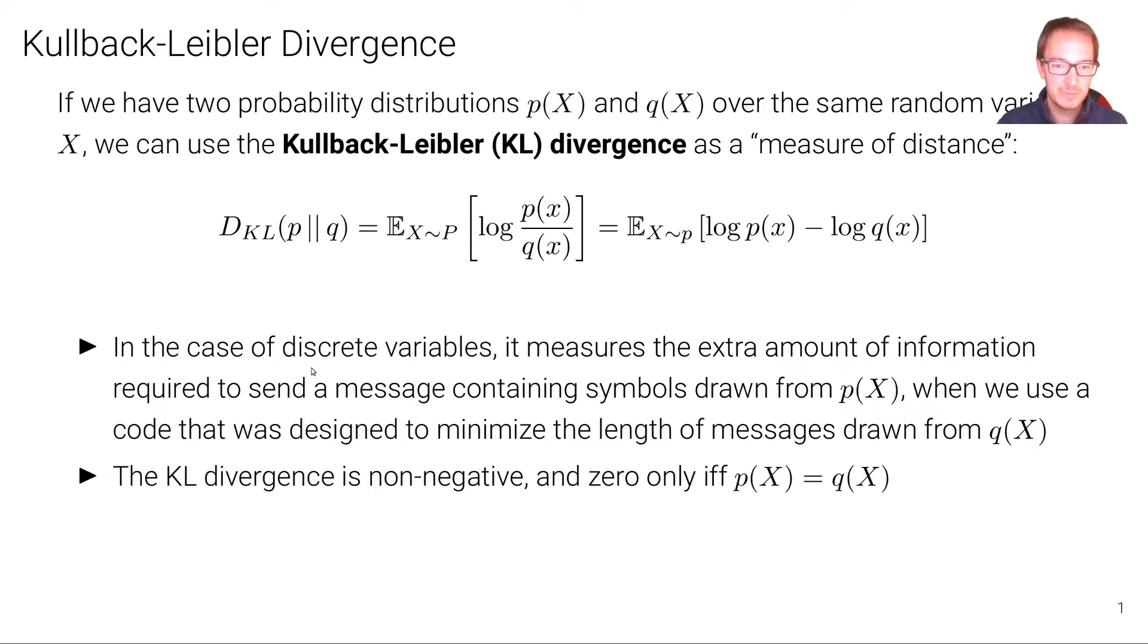In the case of discrete variables, this measures the extra amount of information required to send a message containing symbols drawn from p(X), when we use a code that was actually designed to minimize the length of messages drawn from q(X). Think about the previous unit, how we looked at optimal messages. If we derive the messages to be optimal for one distribution, but actually send a message containing symbols drawn from another distribution, this is how you can think of in the discrete case what the Kullback-Leibler divergence measures. And this is actually also where we'll use it in lecture 9 of the deep learning lecture series in the context of evaluating language models.